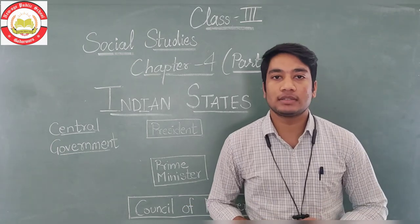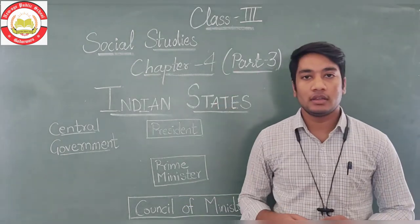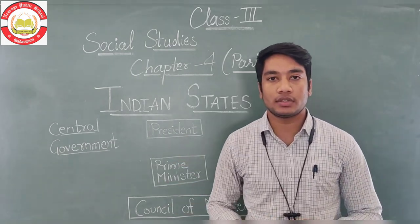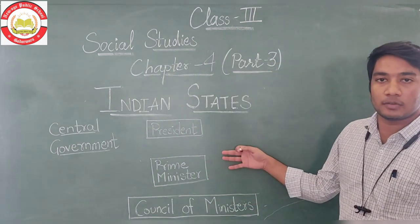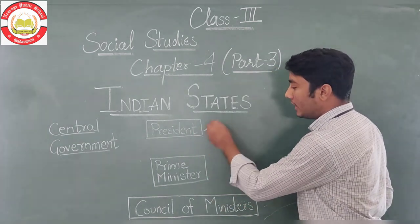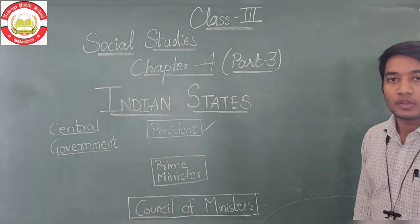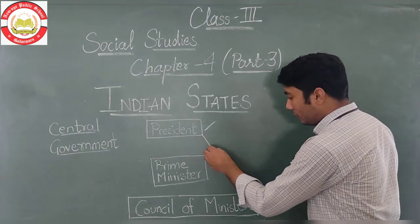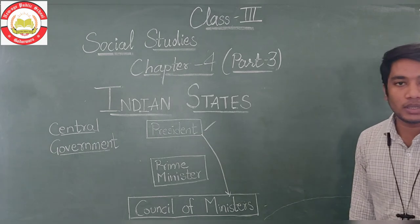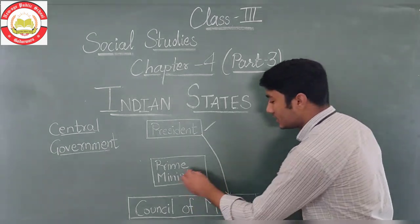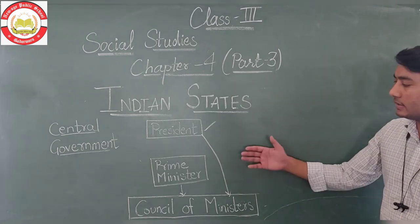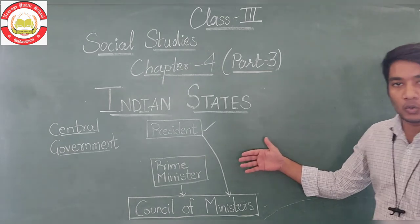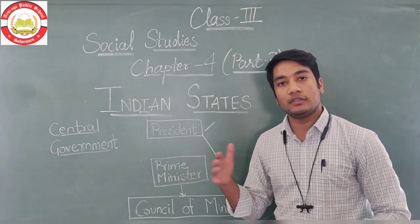Our chapter is completed. This is all for part number 3. Let me conclude the whole Central Government structure and State Government structure. In Central Government, the President is the head. For supporting the President, there is a council of ministers. The head of these council of ministers is the Prime Minister. These all officials have their offices in Delhi, which is our capital of India.